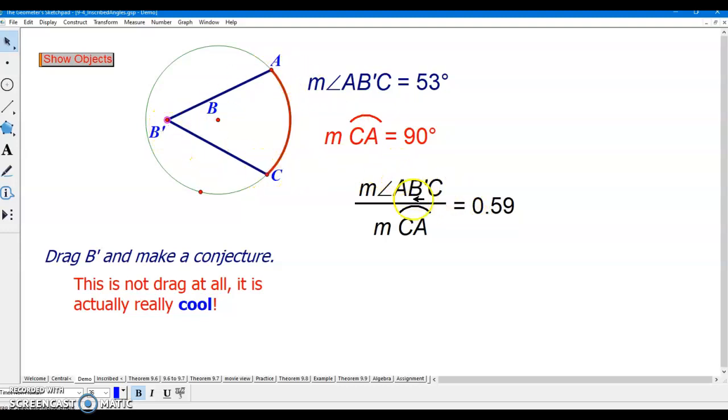Actually, this angle is smaller than 90 degrees. And as I keep dragging B' to the left, further away from the center, it keeps getting smaller and smaller. Over here I have a ratio comparing angle AB'C to arc CA, which is the same as angle ABC. This angle is smaller than this angle or arc, so notice that this ratio is getting less than 1.